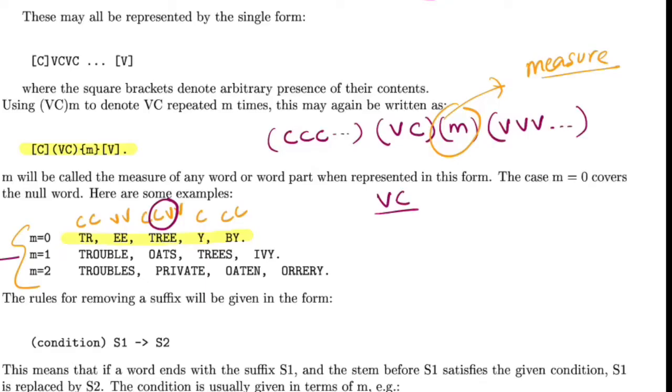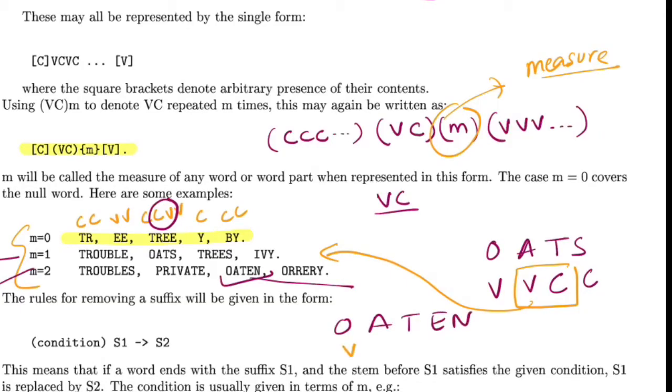In the second example with OATS, you have V V C C, so this is one VC pair, which is why M equals one. For the third set where M equals two, like the word OATEN, you have O A T E N, which gives you V V C V C, so you have two VC pairs.